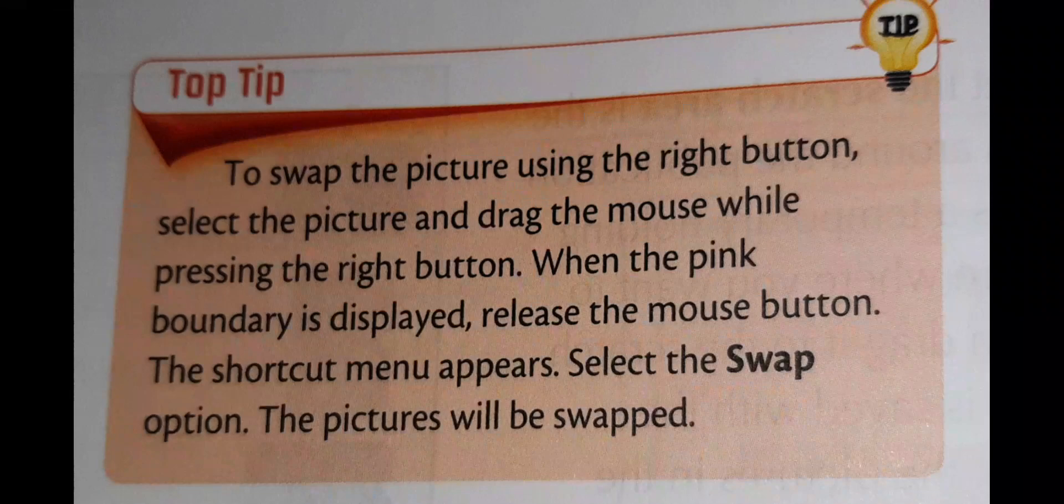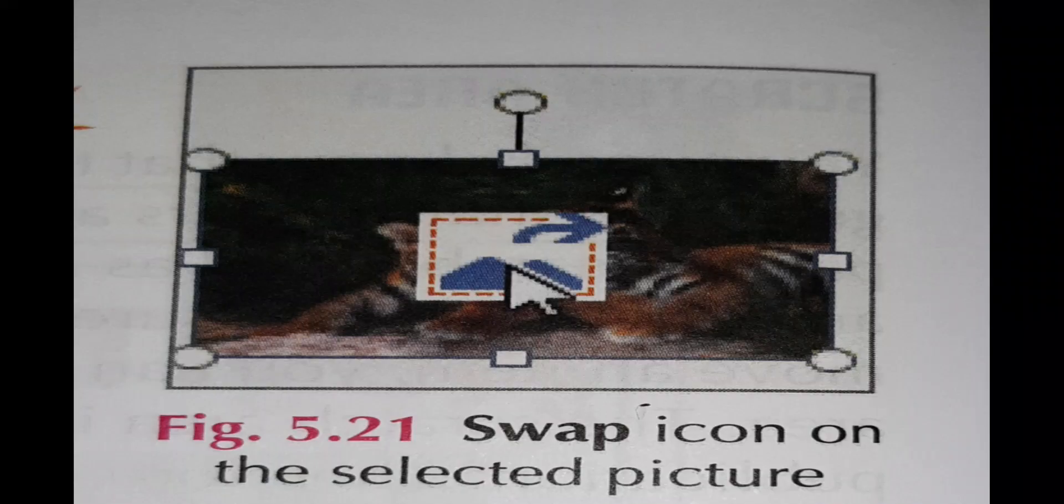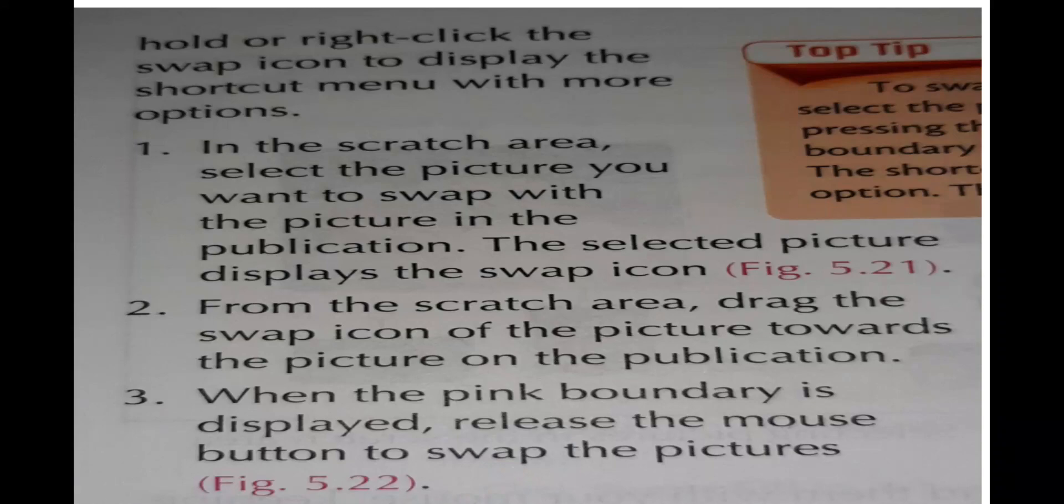Now let's follow the steps. The picture will show you the swap icon. As you drag the mouse and release the mouse, the picture will swap. You can follow the steps, students. In the scratch area, select the picture you want to swap with the picture in the publication. The selected picture displays the swap icon. From the scratch area, drag the swap icon of the picture towards the picture on the publication. When the pink boundary is displayed, release the mouse button to swap the picture.